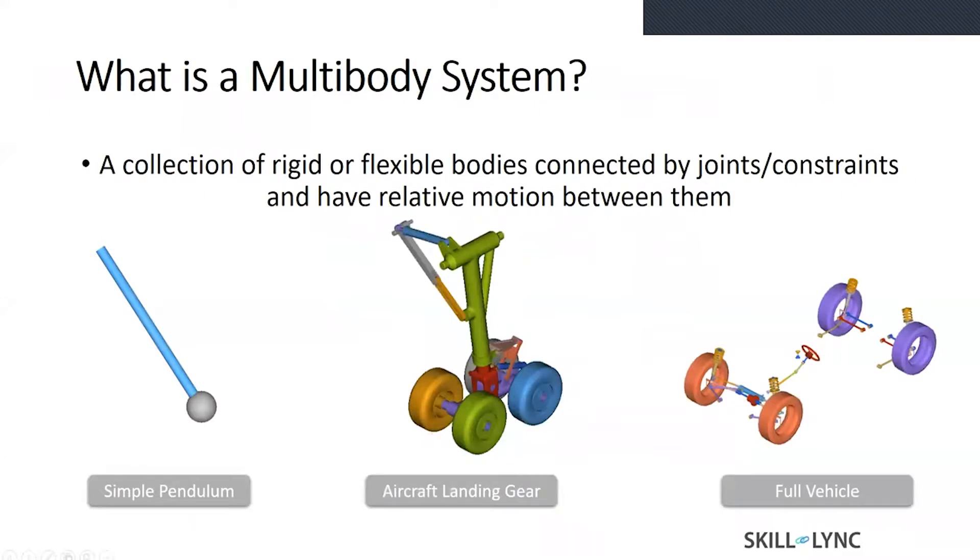We are now in a position to answer this question. A collection of all the entities mentioned in the previous slide—that is, the bodies, constraints, markers, points, etc.—are connected to each other by either joints or constraints and have relative motion between them.